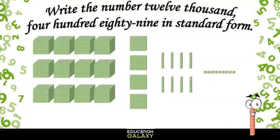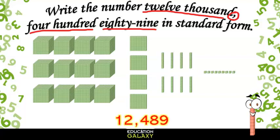Now let's look at how to write the number 12,489 in standard form. We have 12, and then for the word thousand, I write a comma, and then 489. There we go, 12,489.